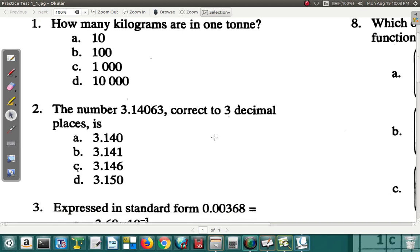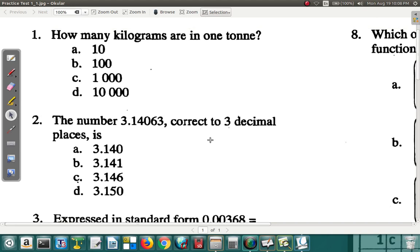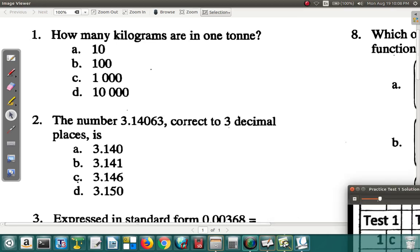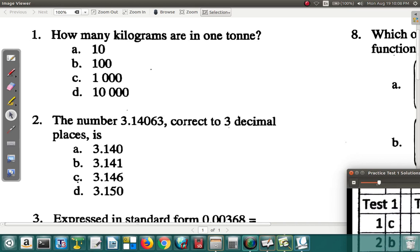Let's continue. The number 3.14063 correct to three decimal places is... Did you get that correct in the online exam? Number two is b, correct to three decimal places. Remember when you're talking about decimal places, you're talking about the number of digits once you pass the decimal point. That's going to be one digit, two digits, three digits. You're going to stop at the zero, but then the number after zero, if it's five or more, you go back and add one to the zero so you get 3.141. Question two, the answer is b.